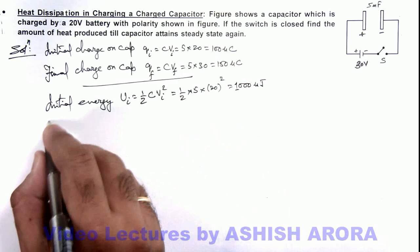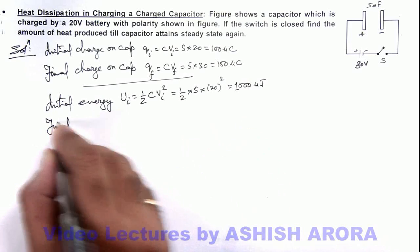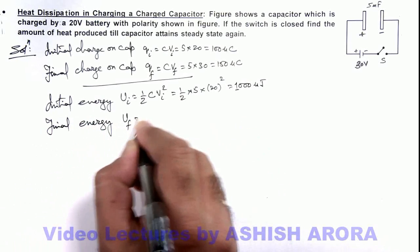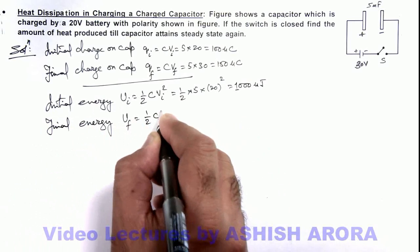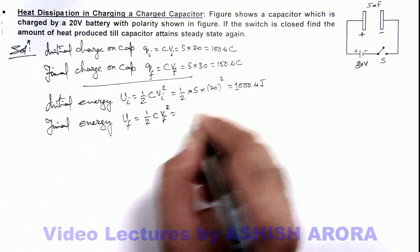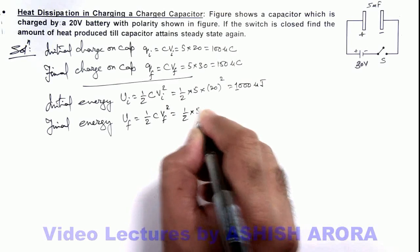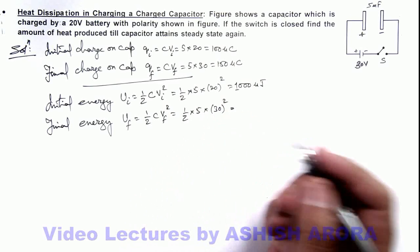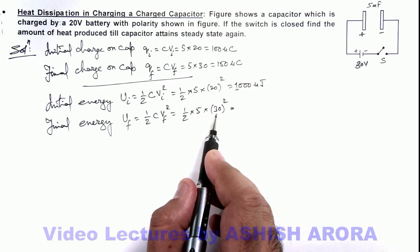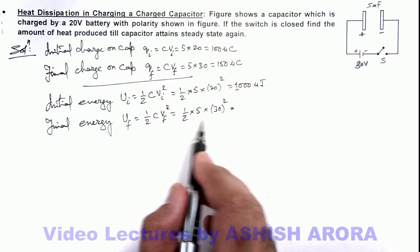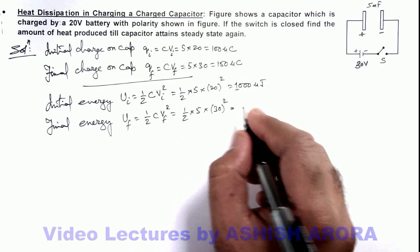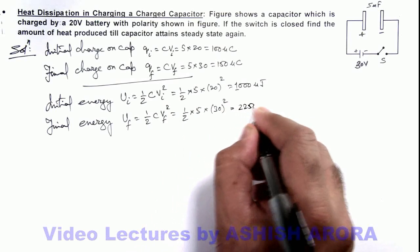And we further calculate final energy in capacitor is U_final. This is ½C V_final squared. This is ½ × 5 × 30². So the value here you can see is 900 multiplied by 5, that is 4500 by 2. So this is 2250 microjoule.